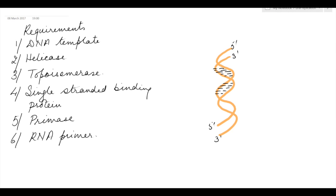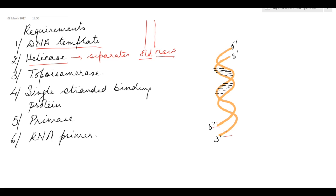Before we go to the detailed mechanism, I will start with the requirements — what is required for DNA replication. First is the DNA template, which is an old strand of DNA upon which the new strand will be formed. For the DNA template to be used, the two strands have to be separated. These two strands are separated by the helicase enzyme, which breaks the hydrogen bonds between them.